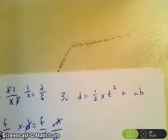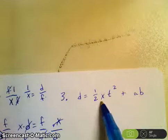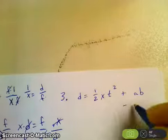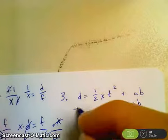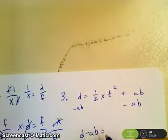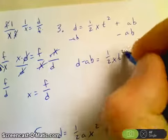Let's go to the next one. Here we have an addition, and here's our x that we want to isolate for. So the first thing we need to do is get rid of this part. So to do that, I'm going to subtract ab from both sides. So now I have d minus ab equal to 1 half x t squared.